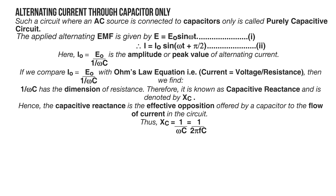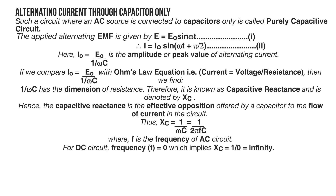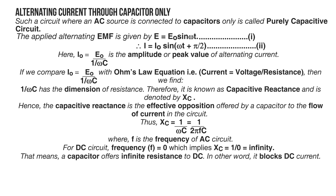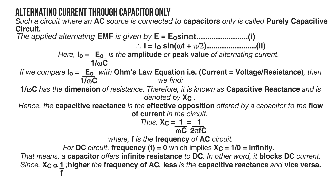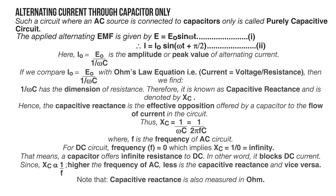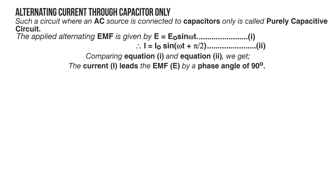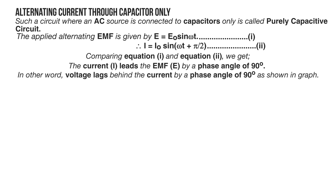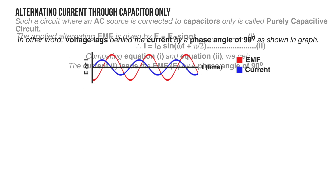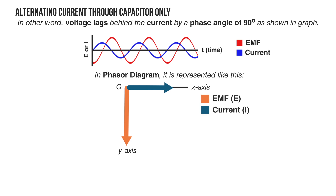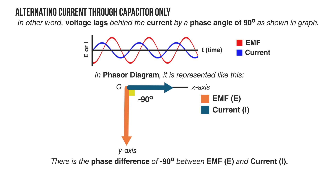For DC, f = 0, which implies X_C = infinity — a capacitor offers infinite resistance to DC; in other words, it blocks DC current. Since capacitive reactance is inversely proportional to frequency, higher AC frequency means less capacitive reactance, and vice versa. Capacitive reactance is also measured in ohms. Comparing equations 1 and 2, the current leads the emf E by a phase angle of 90°; equivalently, voltage lags behind current by 90°, as shown in the graph. In the phasor diagram, emf E makes an angle of −90° with reference vector current I, giving a phase difference of −90°.